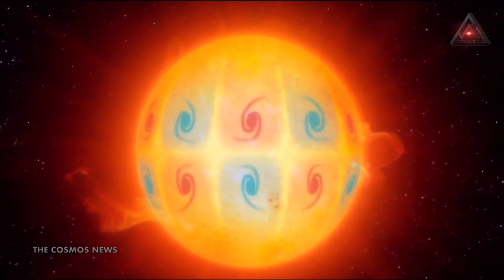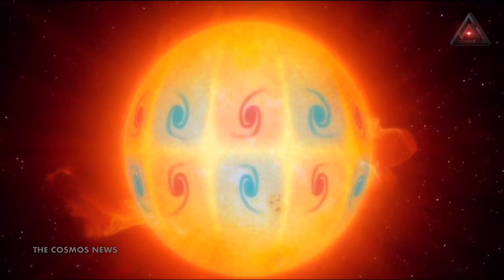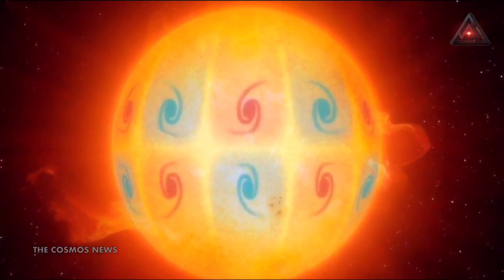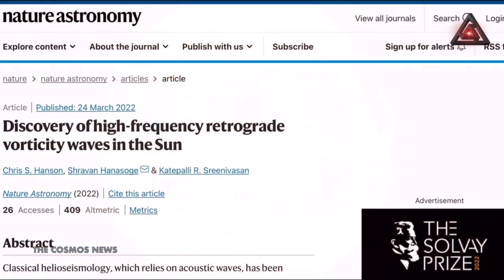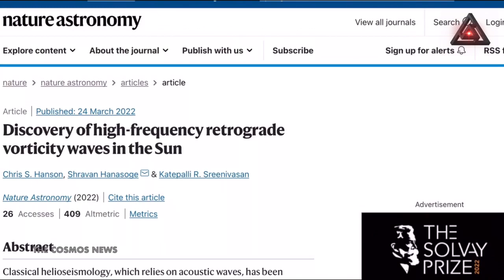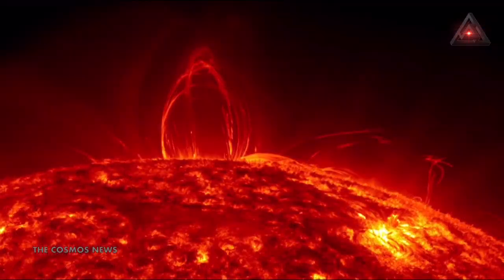The previously unknown type of wave was described in a study published March 24th in the journal Nature Astronomy. Scientists can't see into the sun's fiery depths, so they often measure the acoustic waves that move across its surface and bounce back toward its core to infer what's going on inside.